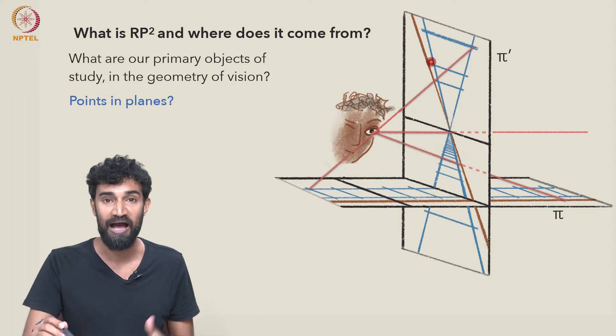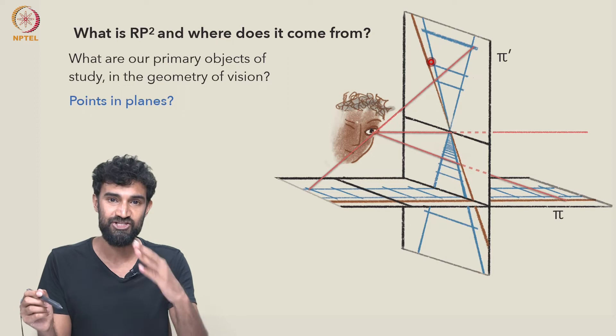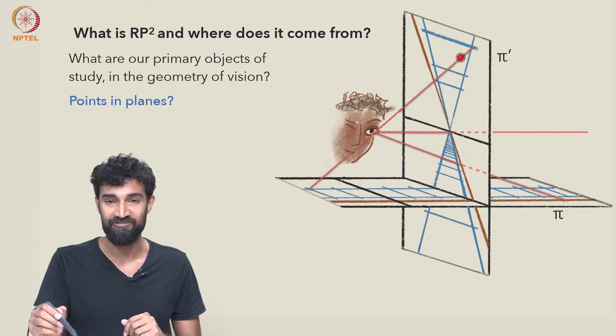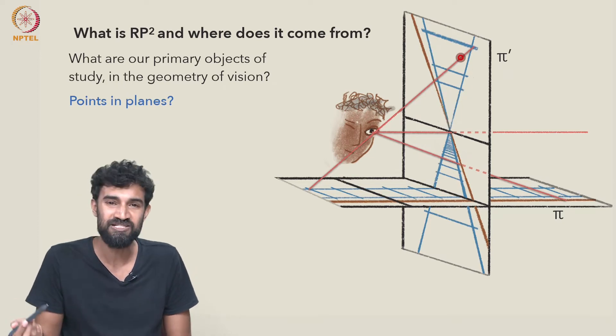and all these different points in π' which make up the image of those railway tracks under this perspectivity, maybe in this perspective drawing or in this photograph up here. So that's one possible answer to that question.